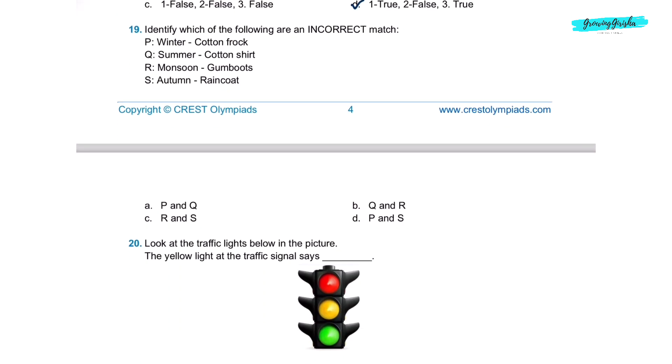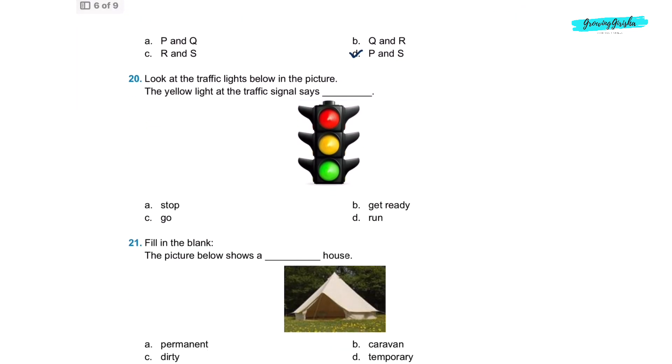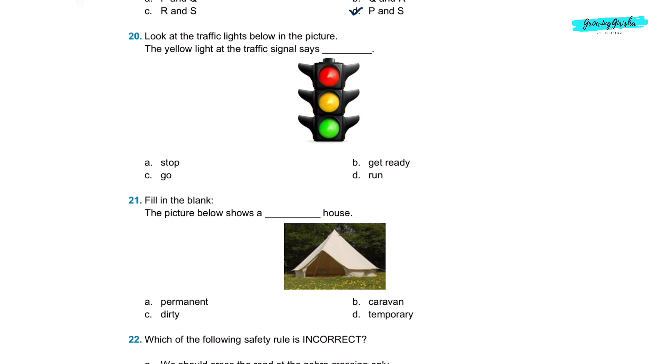Question 19. Identify which of the following are an incorrect match. P, winter cotton frock. This is incorrect. Q, summer cotton shirt. This is correct. R, monsoon gumboots. This is also correct. S, autumn raincoat. This is incorrect. So correct option would be P and S which is in option D. Question 20. Look at the traffic lights below in the given picture. The yellow light at the traffic signal says option B, get ready.